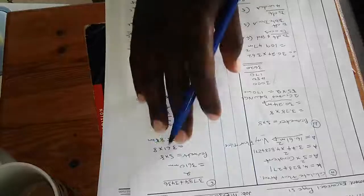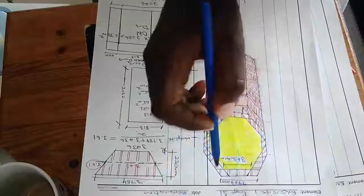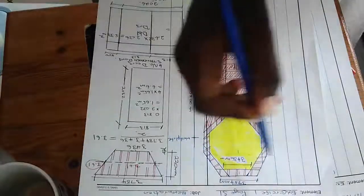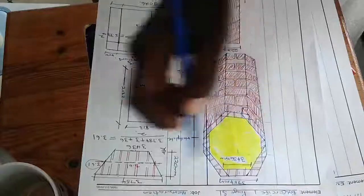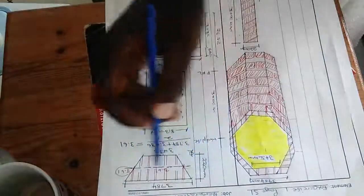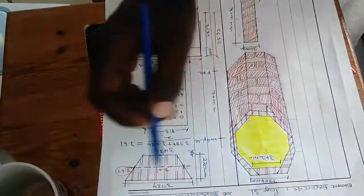Because in brickwork, we cannot take the outer surface to calculate the brickwork core. We cannot take the internal. We need to take the center line, the center dimension of our brick, which is our center line.